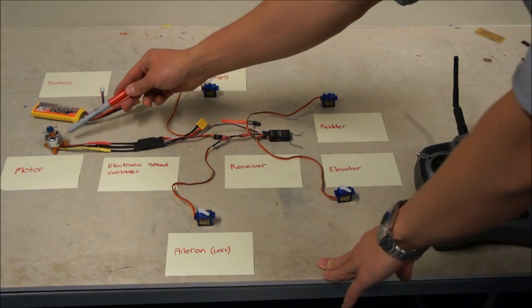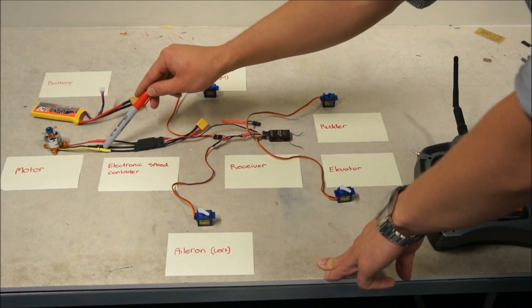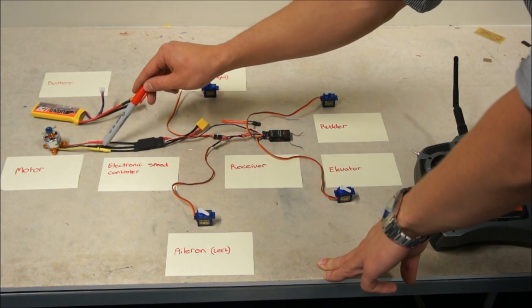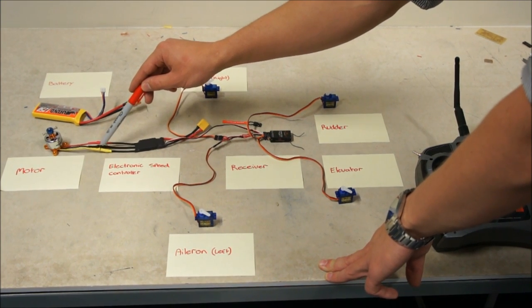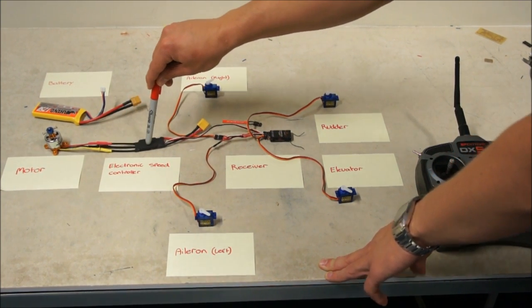So we've got the Turnity motor connected with three leads: red, black and yellow. Your heat shrink will probably just be red and black, connected to the electronic speed controller.